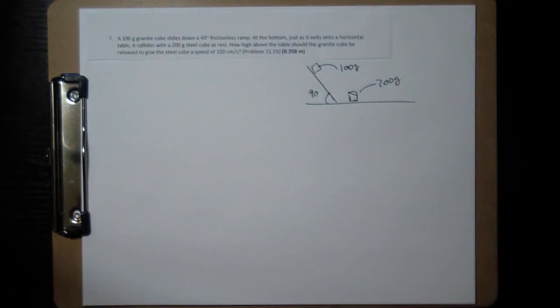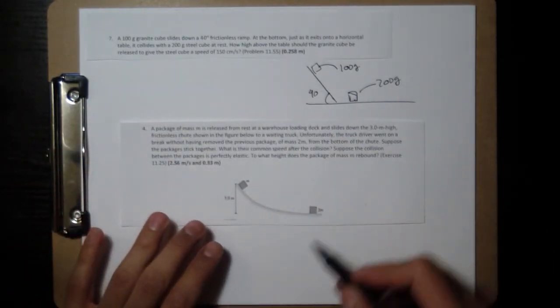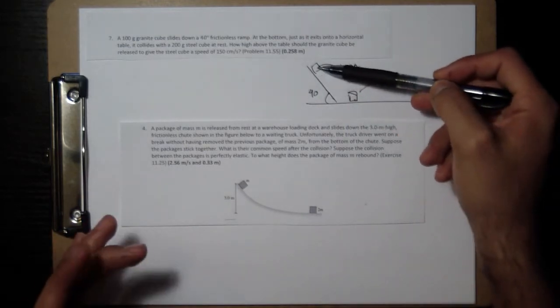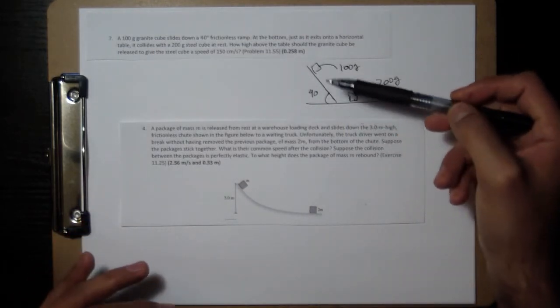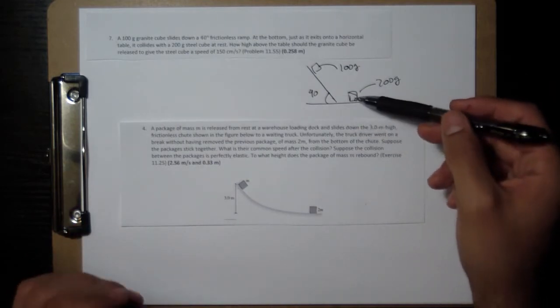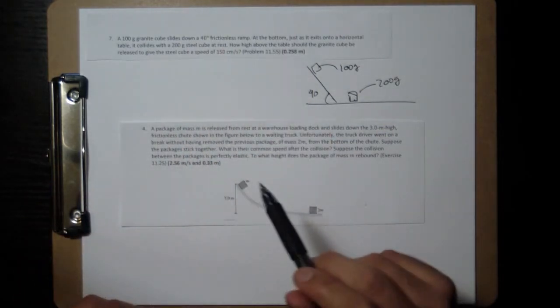The reason this is very similar to problem number four is problem number four has this setup with a rounded ramp, but in this case it's not going to matter because all of that potential energy up here is going to turn into kinetic energy down here, and then it's going to hit. You're going to have conservation of momentum, and even though it doesn't say, you're going to have to use conservation of kinetic energy in order to solve this problem.